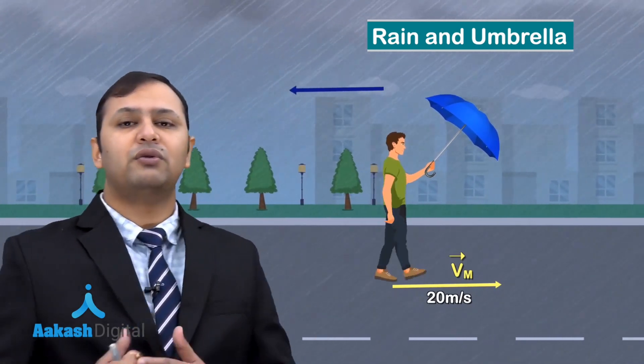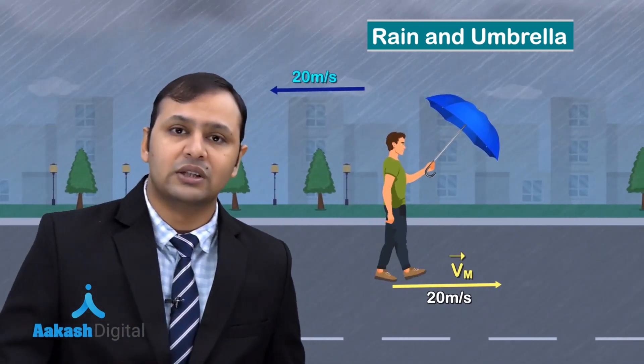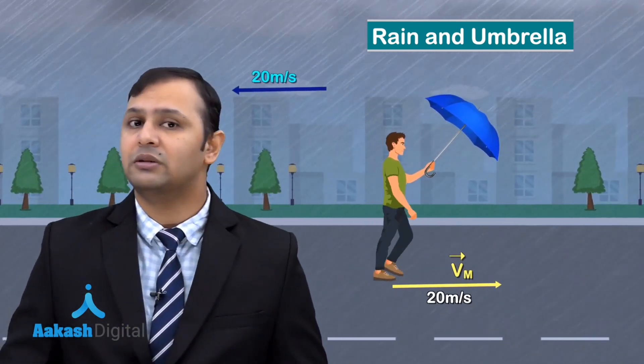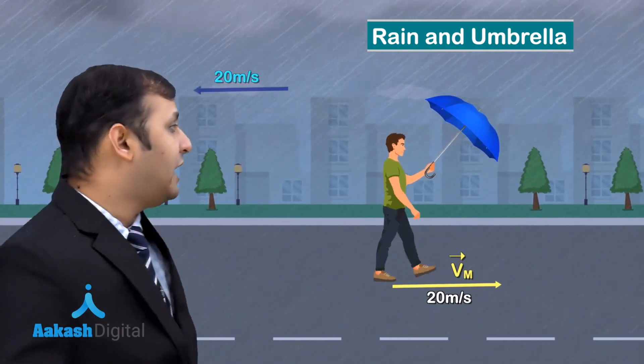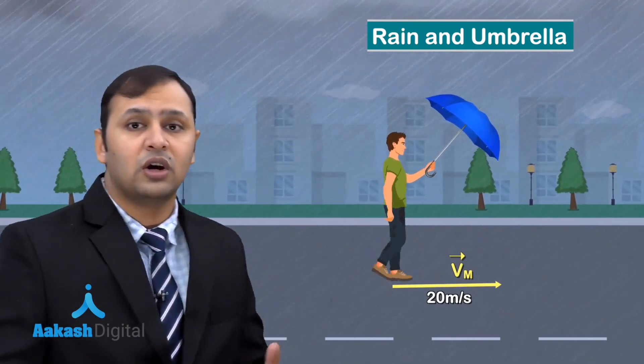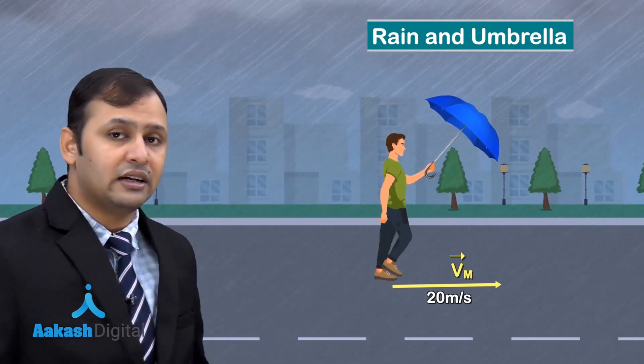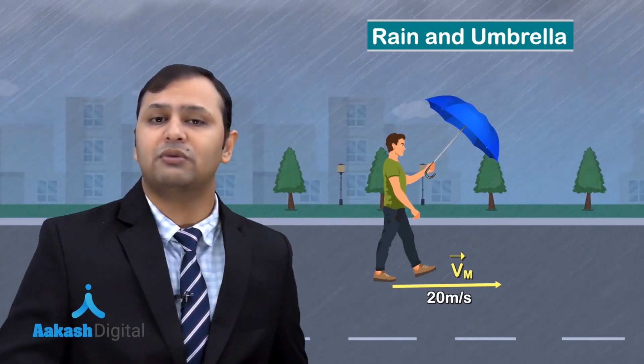Whenever you run in a direction, the wind appears to flow in the opposite direction with the same magnitude of velocity. So if you are moving north at 20 m/s, the wind will appear to flow south at 20 m/s, and that wind tilts the vertically falling raindrops to an angle.